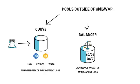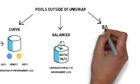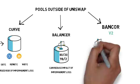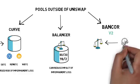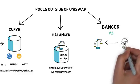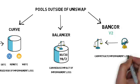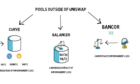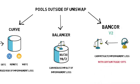Another way of fighting impermanent loss was recently introduced by Bancor. Bancor V2 pools can adjust their weight automatically based on external prices coming from price oracles. This can completely mitigate impermanent loss, even in pools with volatile assets. You can learn more about Bancor V2 in this video.